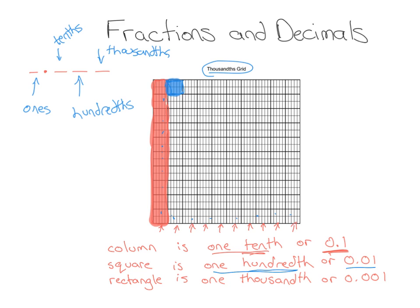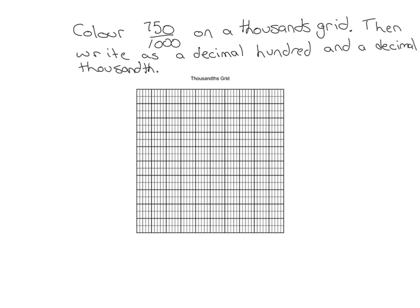The last thing is, we're going to look at one rectangle — just this one in the top right corner. If I color it in, that's one rectangle. How many little rectangles are there? Well, there's a thousand altogether. So if you have one of these, that is equal to one-thousandth of the whole thousandths grid, or 0.001. So let's try a couple of questions and see if we can work this thousandths grid.